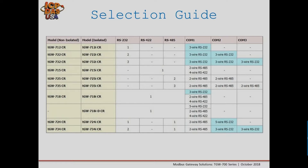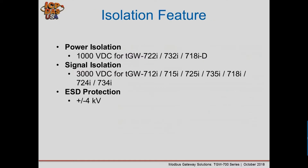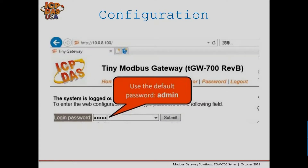Some modules include isolation. To order, simply select the number of COM ports and type needed, and whether isolation is required. The isolation option adds power isolation up to 1000 volts DC and signal isolation along with ESD protection.